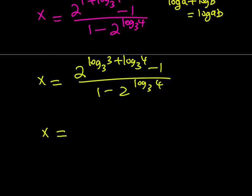Now we can use that rule and write x as 2^(log₃12) - 1 divided by 1 - 2^(log₃4). And that brings us to the end of this video.